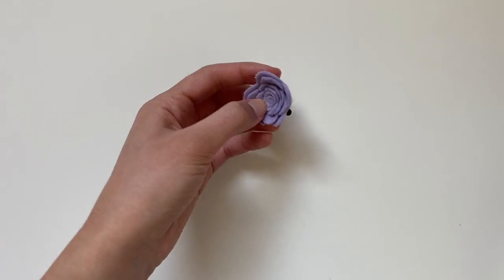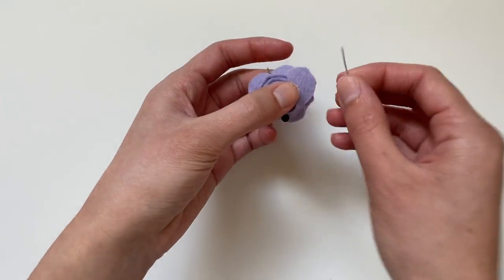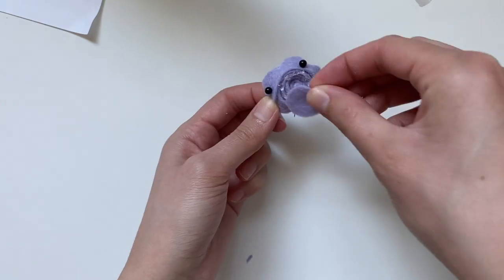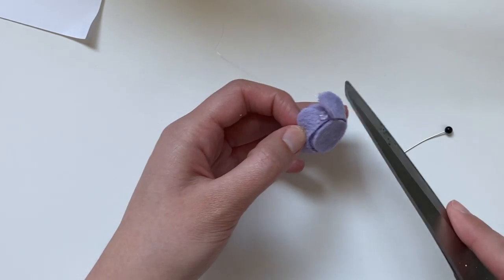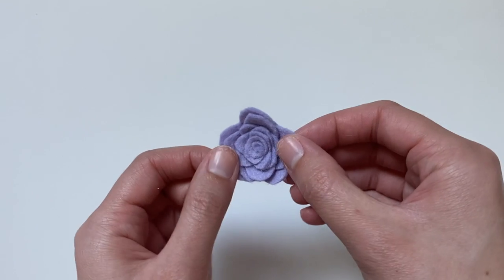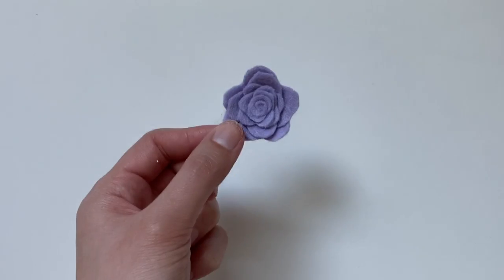Before gluing this together, I'm just using two pins to hold it in place. Then I'm cutting out a circle of felt with the same color and gluing that onto the back. Then I'm adding a dot of glue to the end of the spiral. Here is the final rose. I think it turned out so cute. Now I just need to make a few more off-camera.